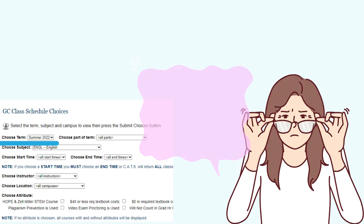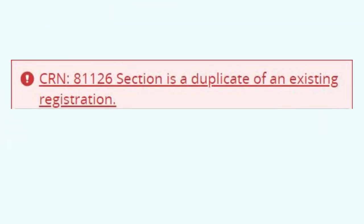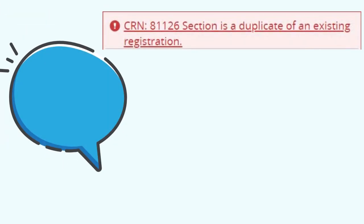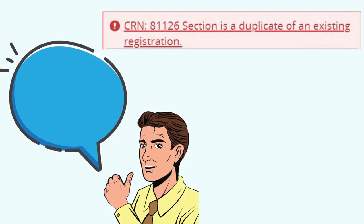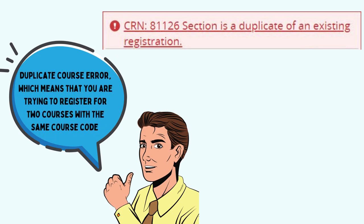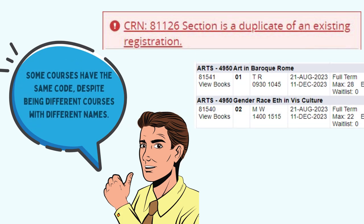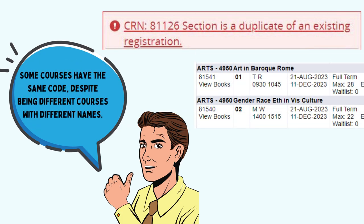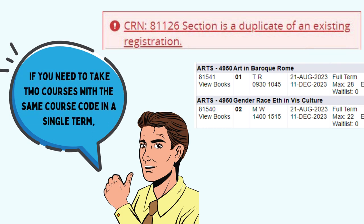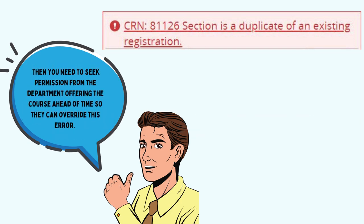This is the duplicate course error, which means you're trying to register for two courses with the same course code, such as ARTS 4950. Some courses have the same code despite being different courses with different names. If you need to take two courses with the same course code in a single term, you need to seek permission from the department offering the course ahead of time so they can override this error.